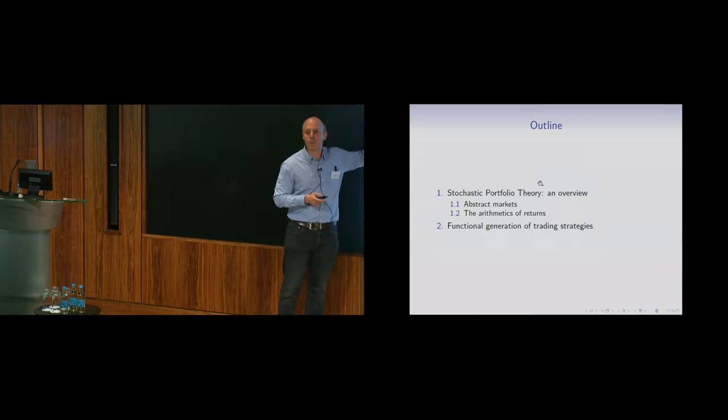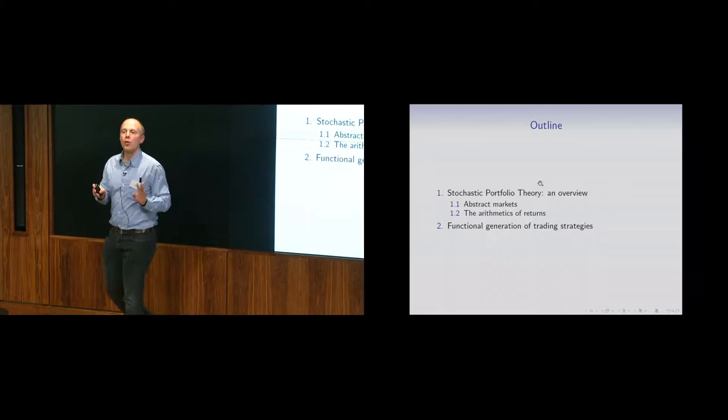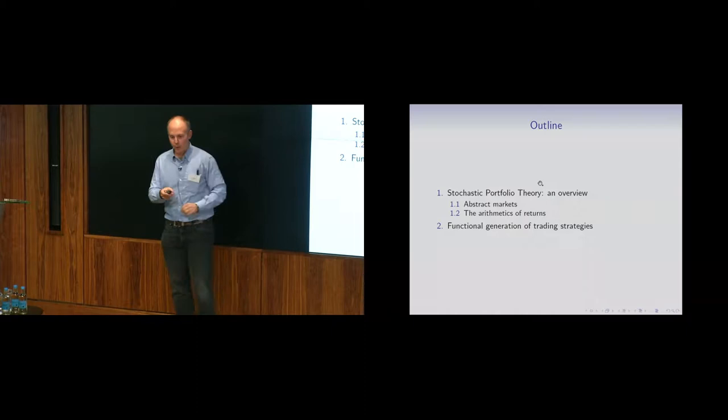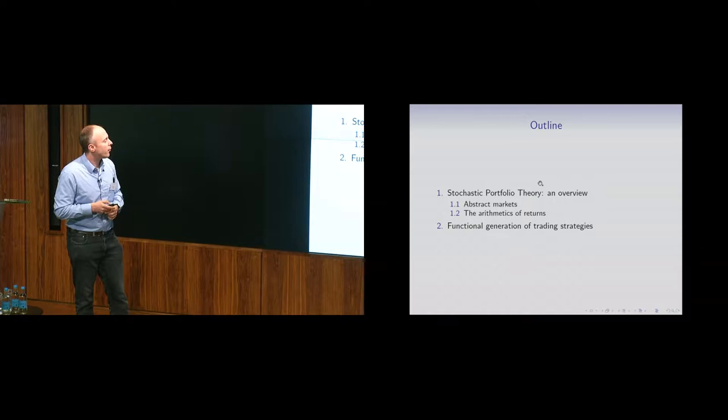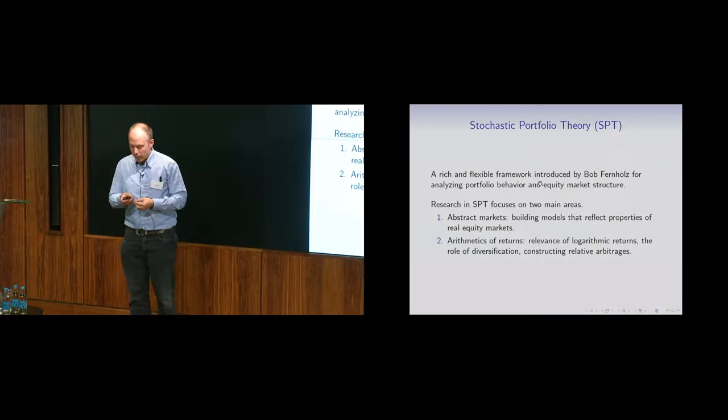This is the outline of my talk. I want to start with a few slides on something called abstract markets in stochastic portfolio theory, and then a few slides on the arithmetic of returns — we only need to know how to divide and multiply numbers — and abstract markets will have only a picture, so not a lot of math. Stochastic portfolio theory is a field started by Bob Fernholz in the 70s and 80s.